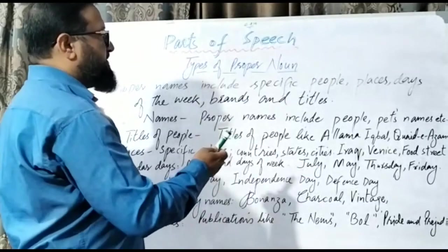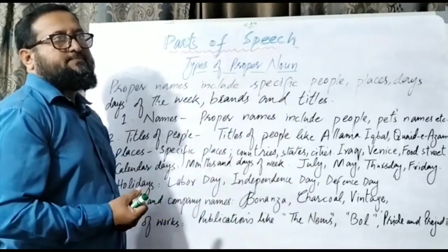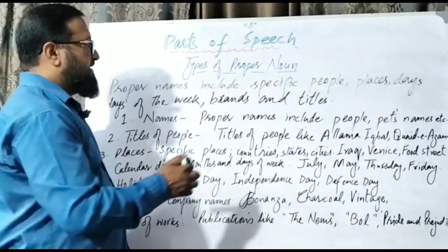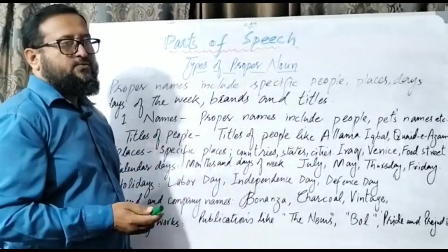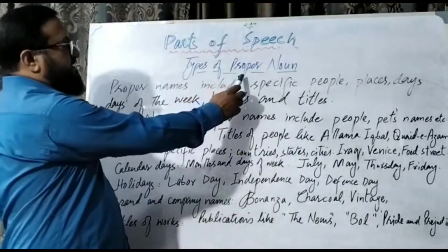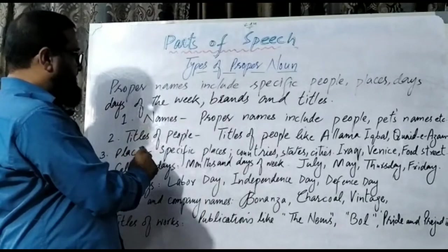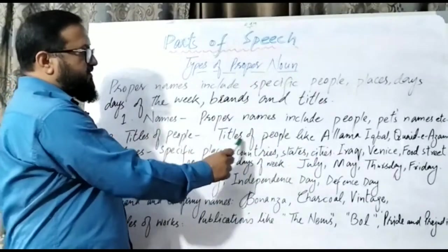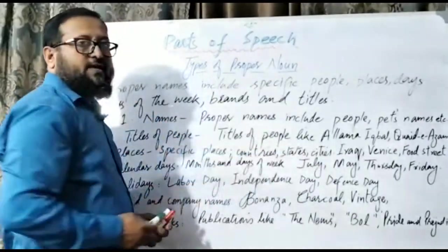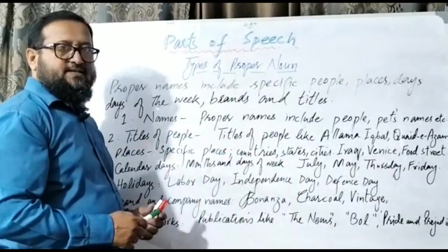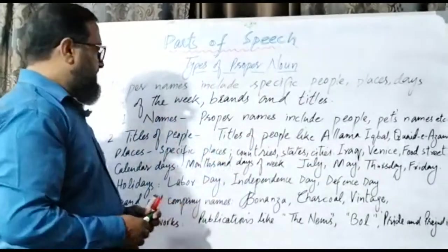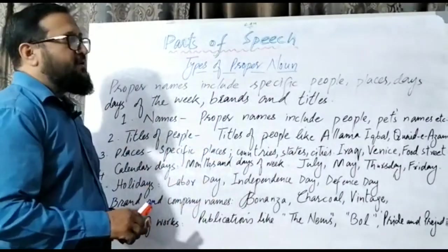These are specific people's or pets' names — or a breed like German Shepherd. These are specific names and can be considered proper nouns. Number two is titles of people, like Allama Iqbal or Quaid-e-Azam. Allama is a general word, however when it is given as a title, it is used in capital. And Quaid-e-Azam is also a title, so you have to use it as a capital letter — as a proper noun.